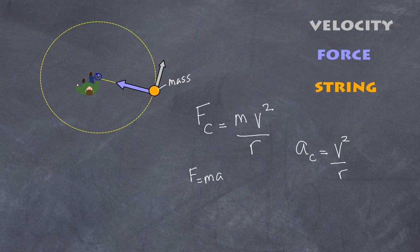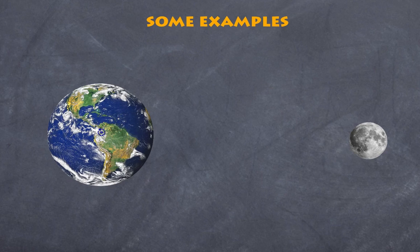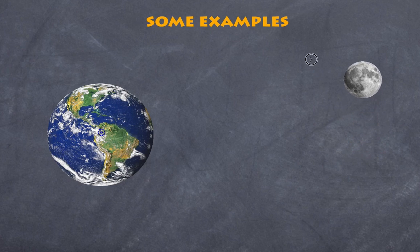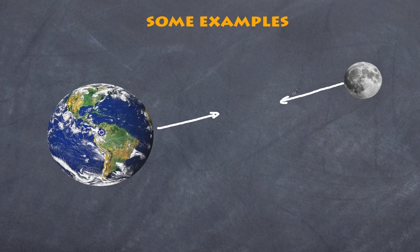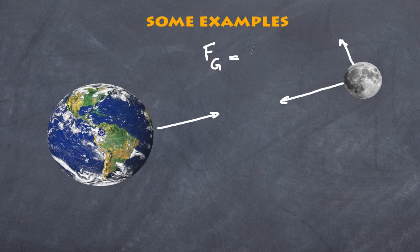Here's another example: the Earth and the Moon. The Moon revolves around the Earth in a circular path. What causes it to follow that path? There is a gravitational force of attraction between the two objects. The force exerted on the Moon points toward the Earth and is at 90 degrees to the Moon's direction of motion. In this case, the gravitational force is equal to the centripetal force.